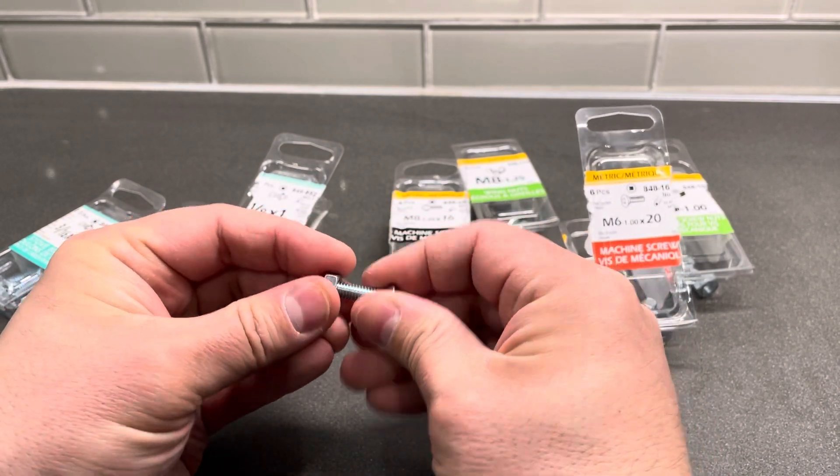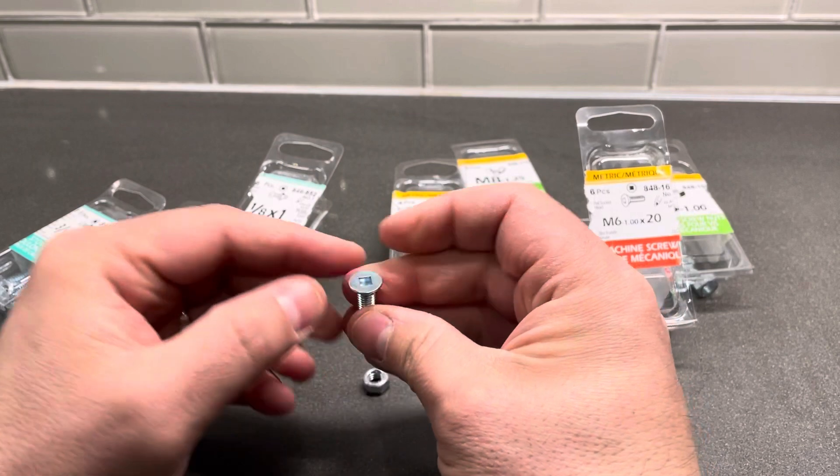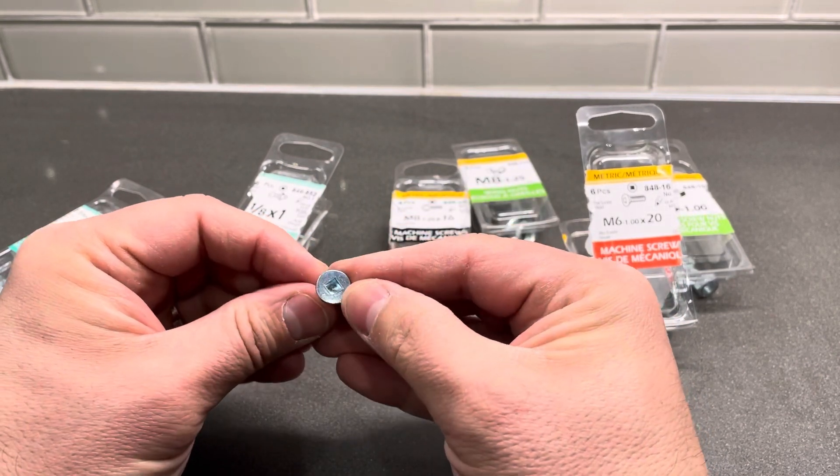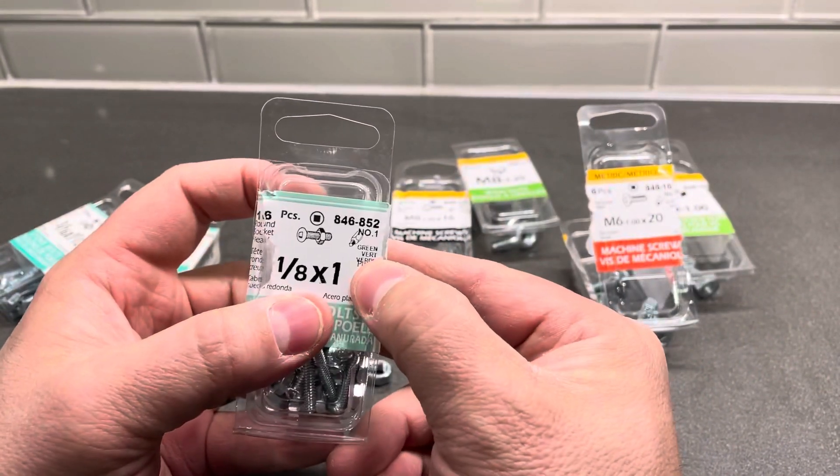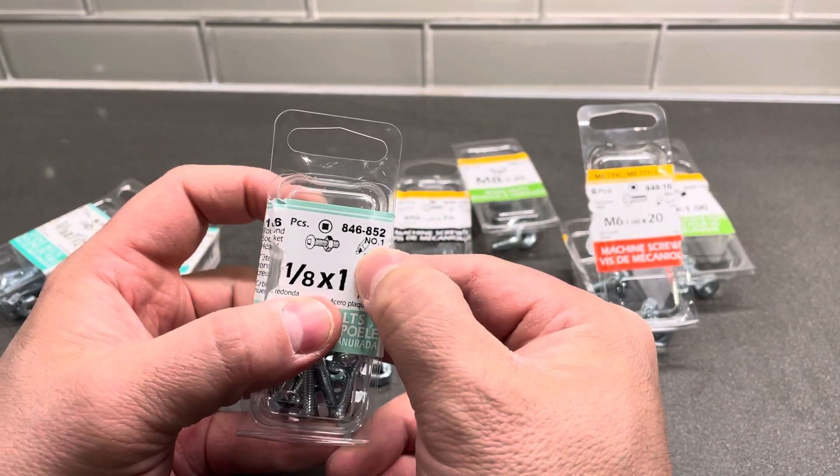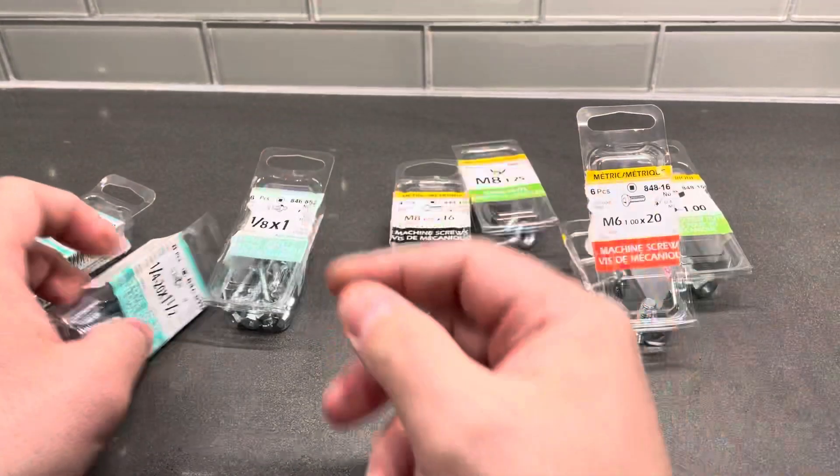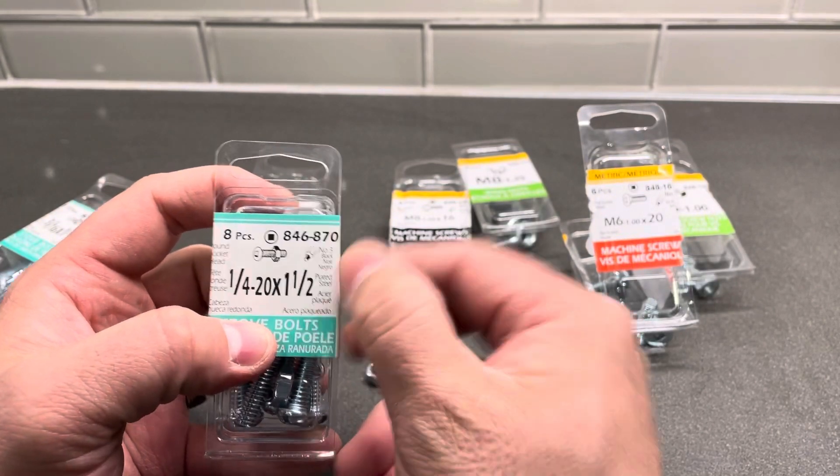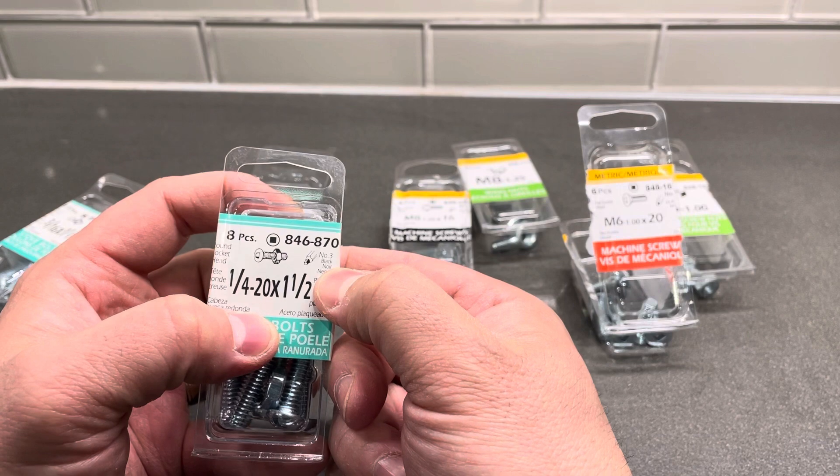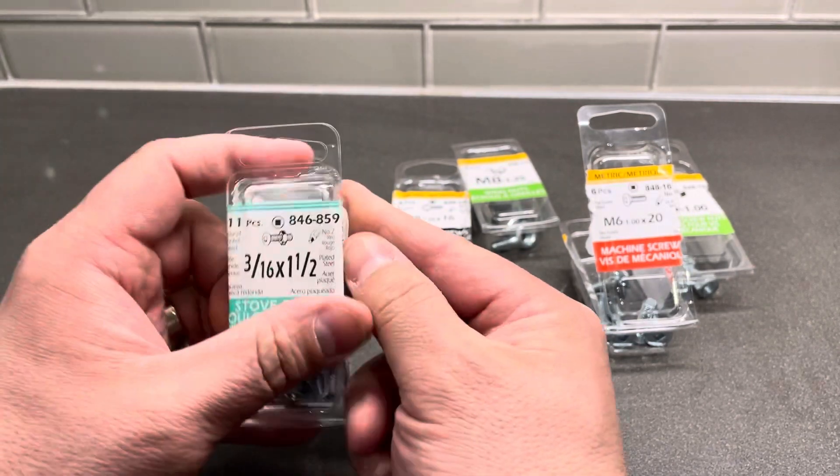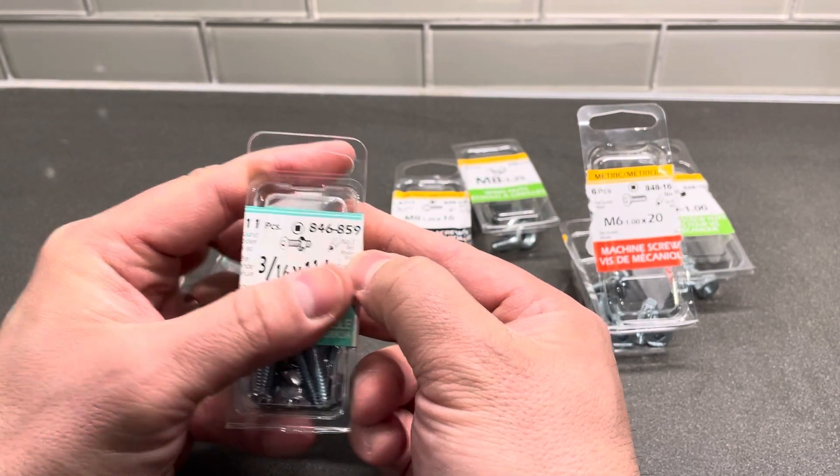In terms of actual bolts, they have different types of heads. You can see on these packages it shows, for instance, these bolts have a green head, which is a green Robertson head. You need like a green Robertson screwdriver. These ones have a black Robertson head, and these ones have a red Robertson head.